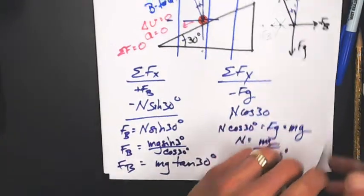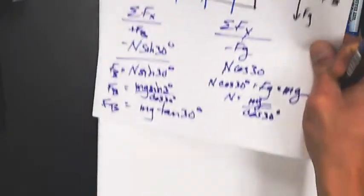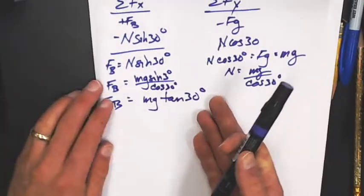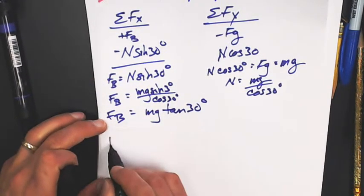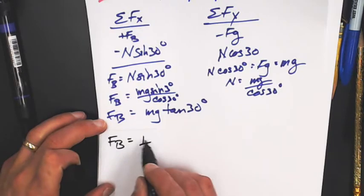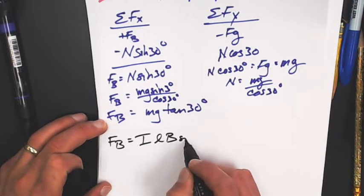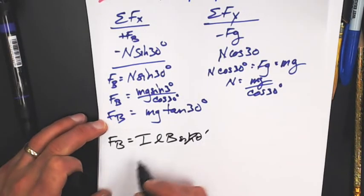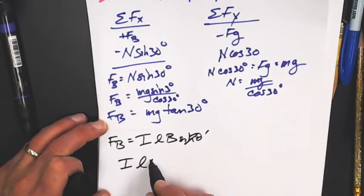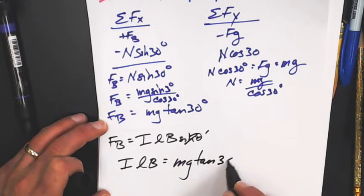Let's slide this up. So if the magnetic force is I L B, because they're at 90 degrees to each other, the sine theta, but that's one because the sine is 90. So I L B equals Mg tan 30.